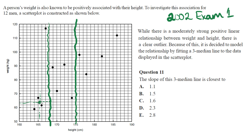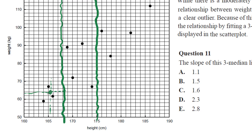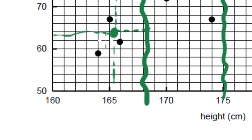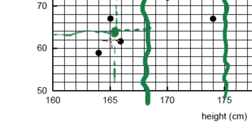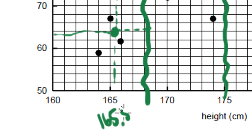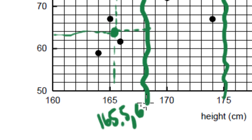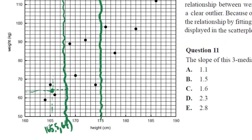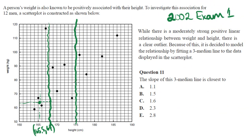The left group median coordinates are: x is halfway between 165 and 166, giving 165.5, and the y coordinate is 64. So the left median point is at 165.5, 64. I'll skip the middle group since I only need the outer two for the slope calculation.